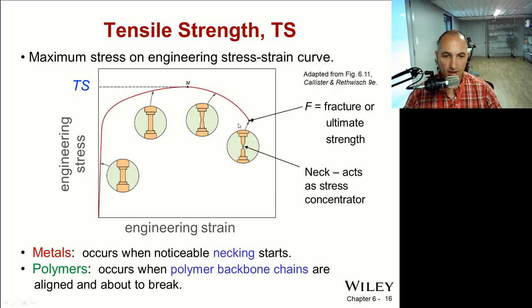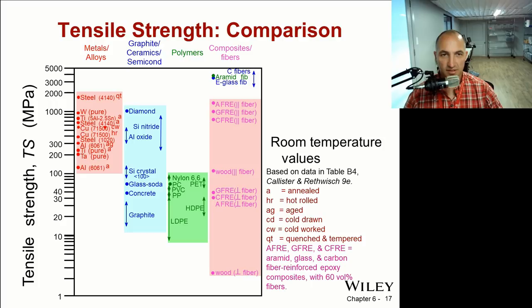For polymers, maximum tensile strength occurs when the polymer backbone and chains are fully aligned and they're about to break. This is again a material property: elastic modulus, yield strength, and now tensile strength. Looking at different materials, metals and steels are very strong, like 4140 quenched and tempered, and fiber carbon fibers are very very strong in tension and they're way up there. Wood is the worst for tensile stress.